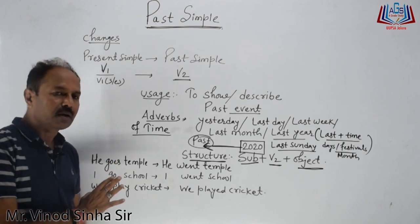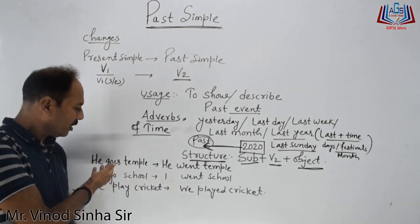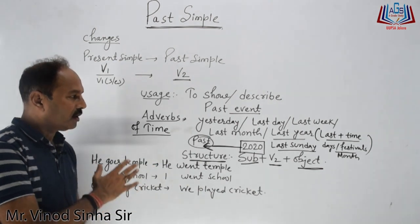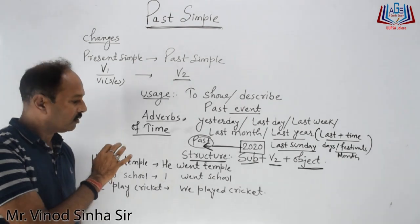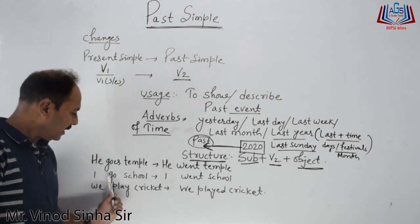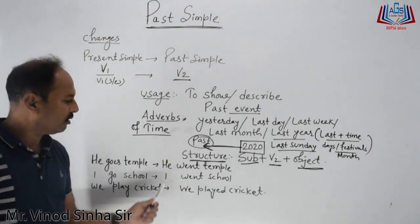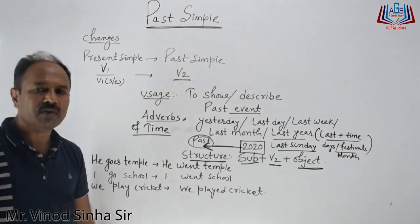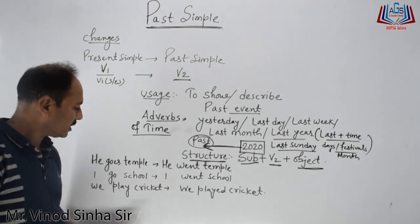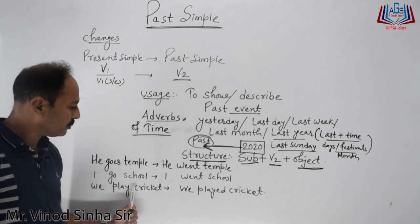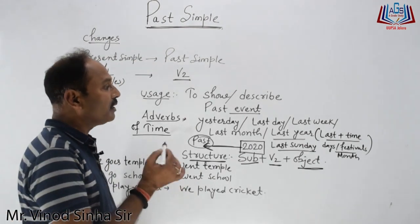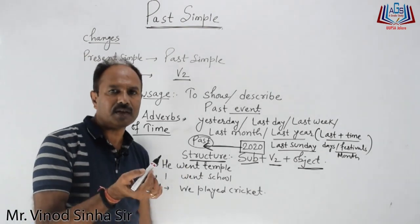For example — 'He goes to the temple' is present simple (routine). But if I say 'He went to the temple,' that is past simple — 'go' becomes 'went,' which is the second form. Similarly, 'I go to school' becomes 'I went to school.' And 'We play cricket on Sundays' — to make it past, we just change the verb to its second form: 'We played cricket.' That is how present simple transforms to past simple.